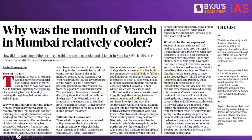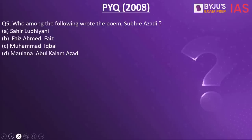Who among the following wrote the poem Sub-e-Azadi? The options are Zaheer Ludhiani, Faiz Ahmad Faiz, Muhammad Iqbal, and Maulana Abul Kalam Azad. The answer is Faiz Ahmad Faiz. This is a previous year question from 2008. Sub-e-Azadi is a poem by Pakistani poet Faiz Ahmad Faiz, written in 1947 in the backdrop of the partition of India. Faiz expresses emotional pain, sadness, and distress due to the breaking of the Indian subcontinent and highlights the people's miseries of having to move to a different place.